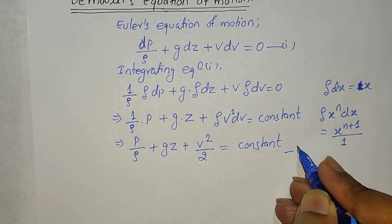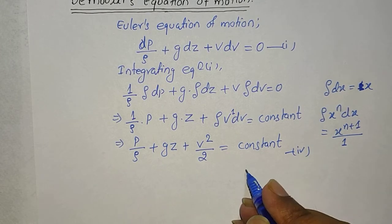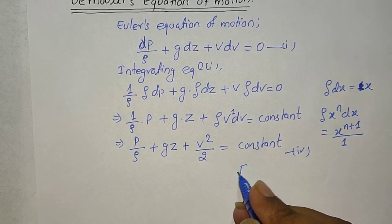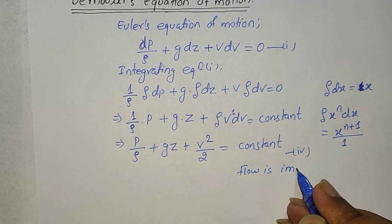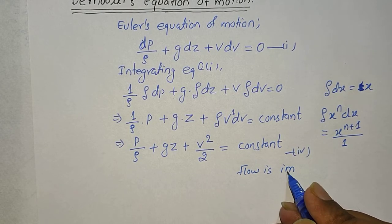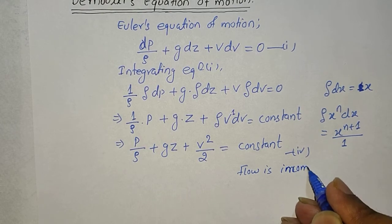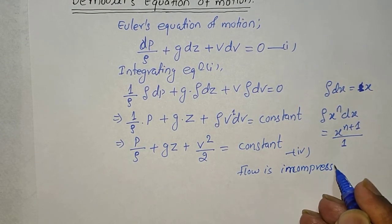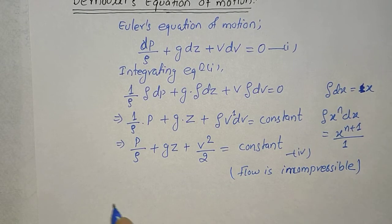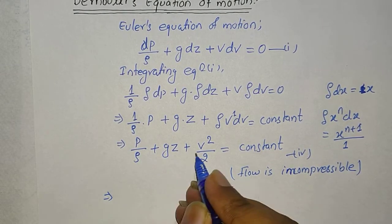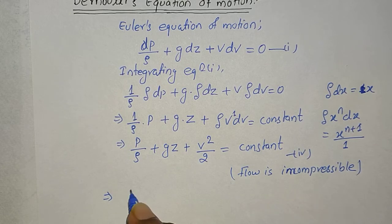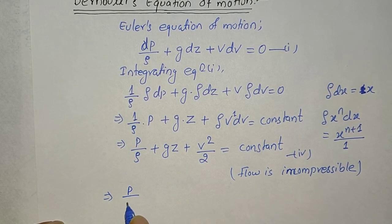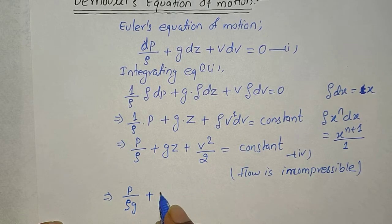This is our final solution, which is the equation when the flow is incompressible. Now let's divide the equation by g, so we can write it as: P/(ρg) + V²/(2g) + Z = constant.